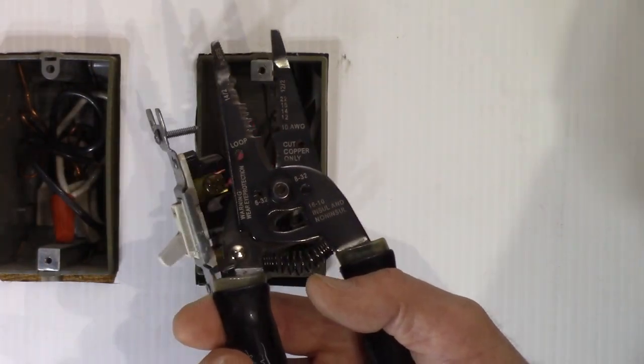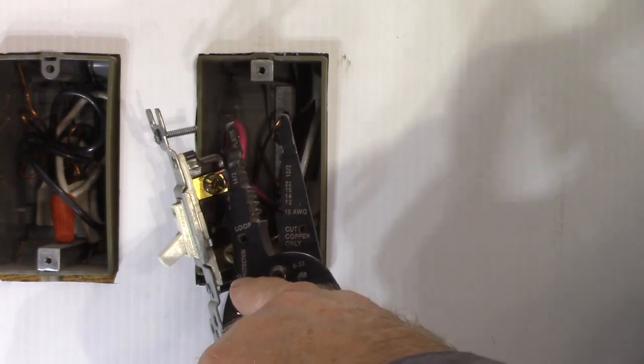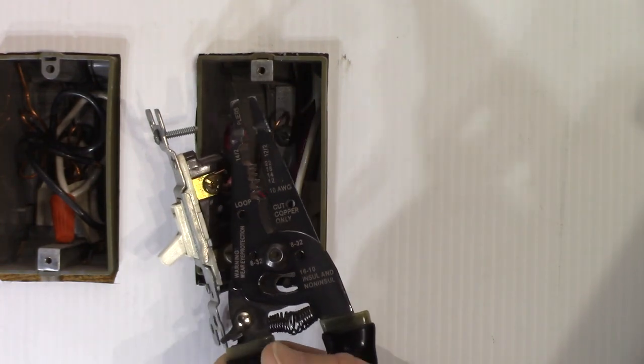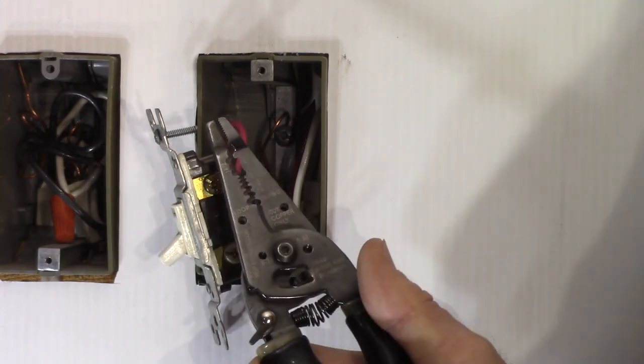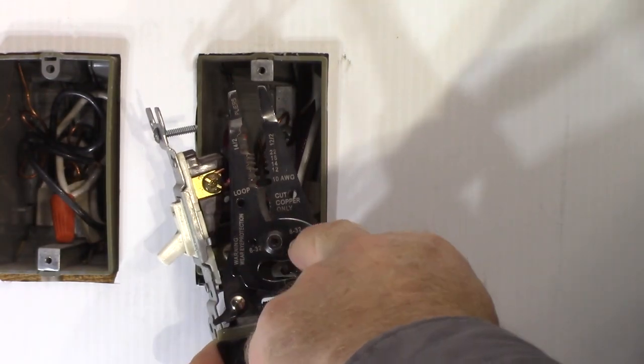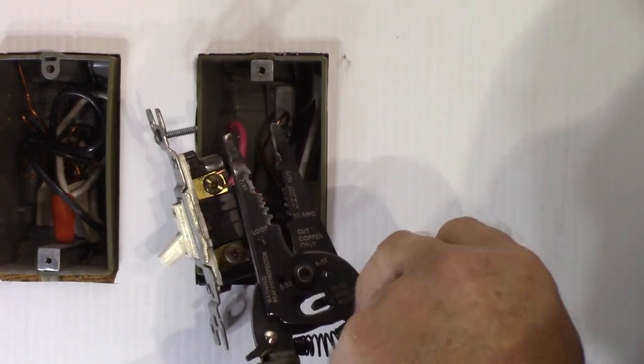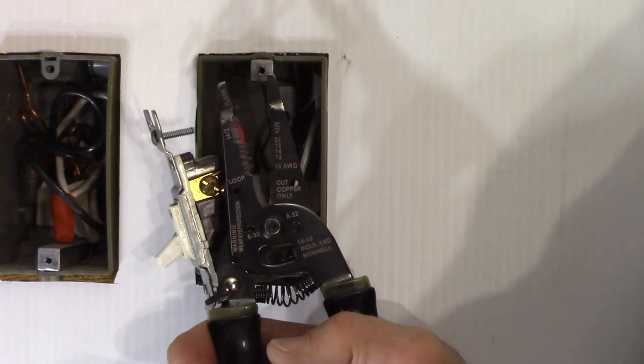Another trick that a lot of people don't know about on most stripping tools, there are bolt cutters or machine screw cutters built right in. So what that does on this one here, it's got a 6-32 and an 8-32. Device screws are 6-32.